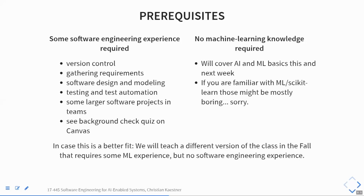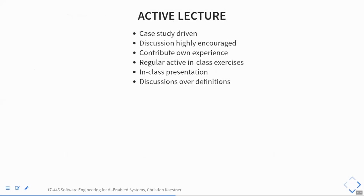I assume you know things like version control, how to gather requirements, a little bit of software design and modeling, some testing and test automation, hopefully some continuous integration, and maybe some larger team software projects. There's an ungraded quiz on Canvas that asks you questions to assess whether your background matches our expectations. We don't expect any machine learning background — I will cover that, especially next week, though it might be a bit boring for those who have already taken a machine learning class.